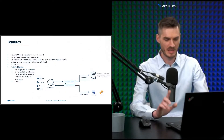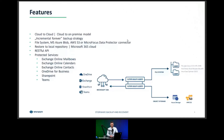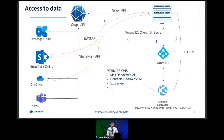We give you an incremental forever strategy — only the first backup is a full one, and subsequent backups are incremental. Where can you store your backups? On a file system, Microsoft Azure Blob, or S3. We also recently added Micro Focus Data Protector. What can we protect? Online mailboxes, online calendars, contacts, OneDrive for Business, SharePoint, Teams channels — both private and public — and one-on-one chat conversations between users.